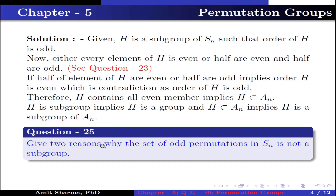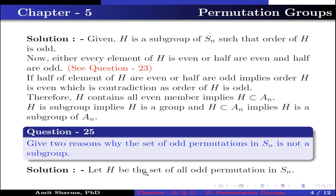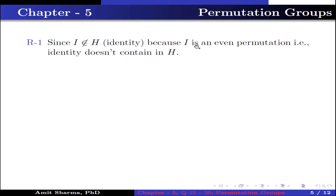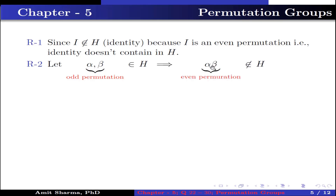Question number 25. Give two reasons why the set of odd permutations in SN is not a subgroup. Let H be the set of all odd permutations in SN. Reason 1: The identity I does not belong to H, because I is an even permutation, so the identity is not contained in H. Reason 2: Let alpha and beta belong to H — both are odd permutations. Then the product alpha beta is an even permutation, which does not belong to H because H is a set of odd permutations. That is, H is not closed.